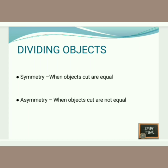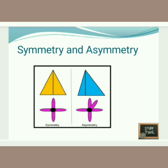Next is dividing objects. We divide an object and check whether the two pieces after cutting are equal or unequal. If the two pieces are equal, it is called symmetry. If the two pieces are not equal, it is called asymmetry. For example, the first picture shows symmetry because both sides are equal. In the second picture, the blue triangle's left side is smaller and the right side is bigger, so that is asymmetry.